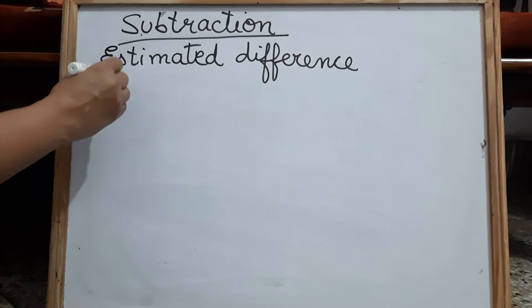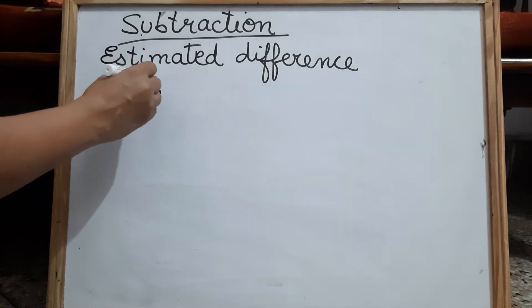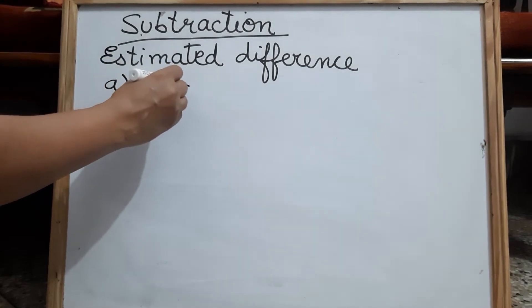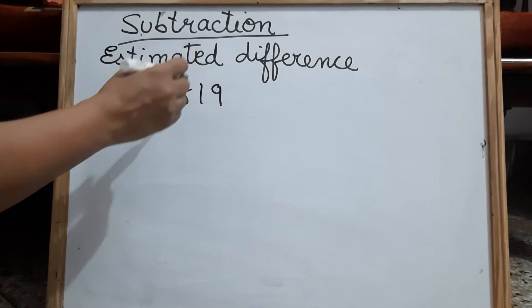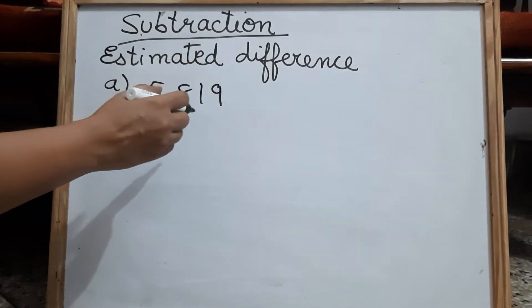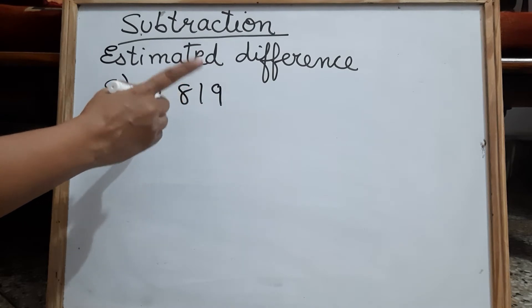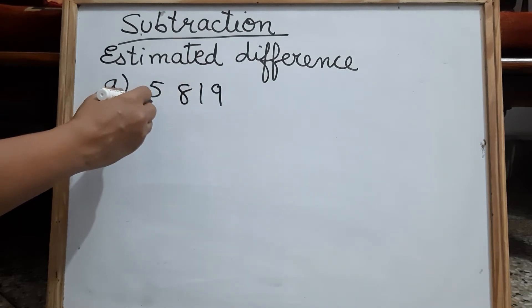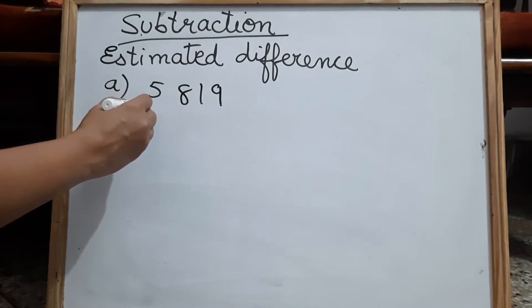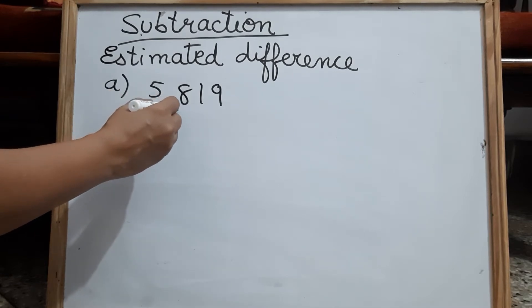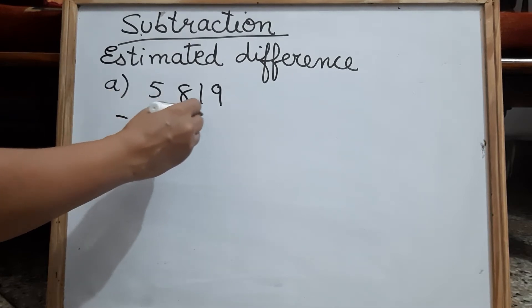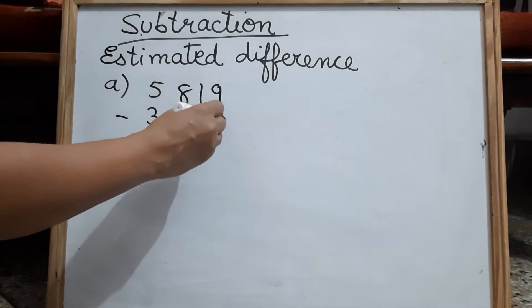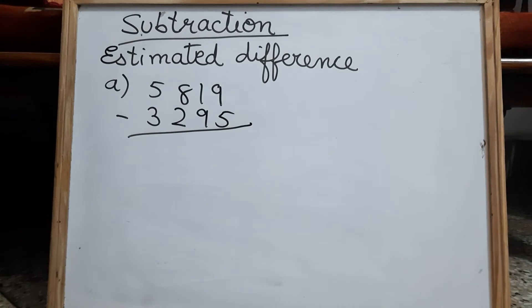I am taking the number 5819. You are going to subtract 3295 from 5819.